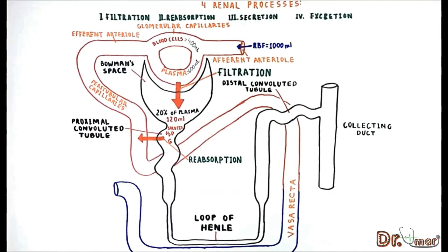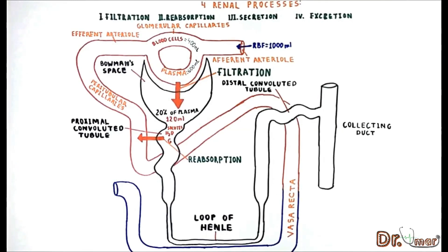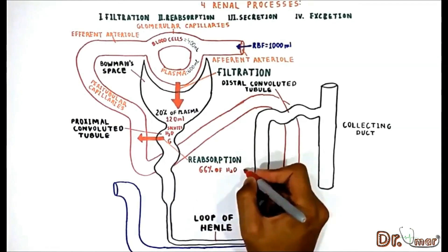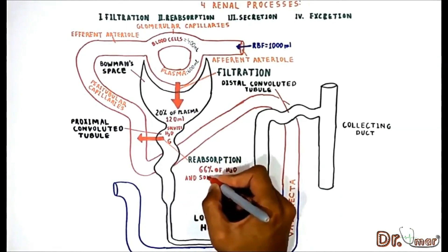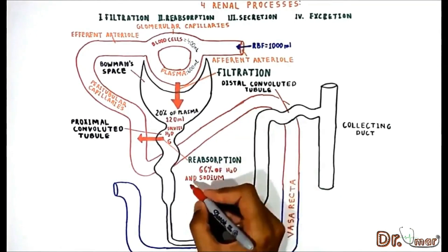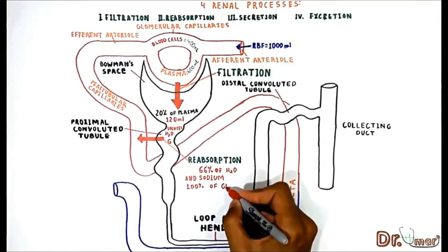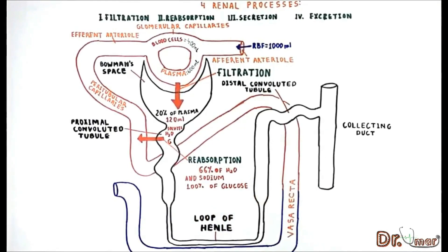This process is known as reabsorption because this is the second time these substances have been absorbed — the first time being when they were absorbed into the bloodstream from the digestive tract after a meal. Under normal conditions, 66% of the water and sodium, and 100% of the glucose, are reabsorbed in the proximal convoluted tubule.